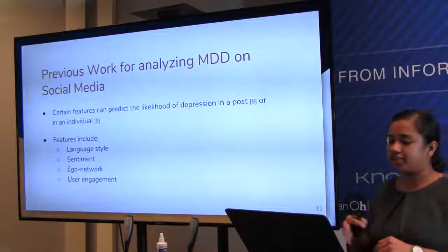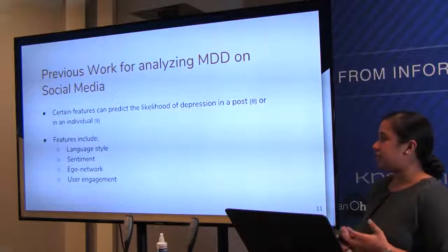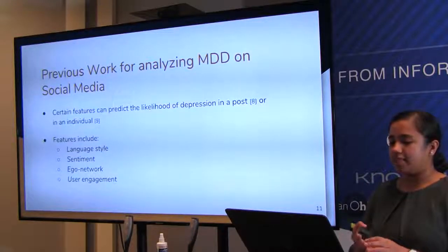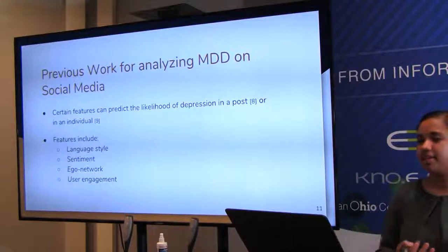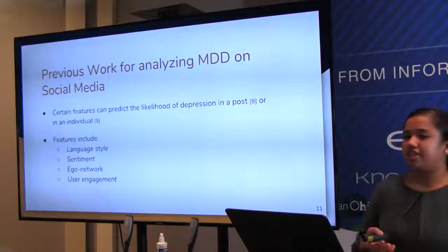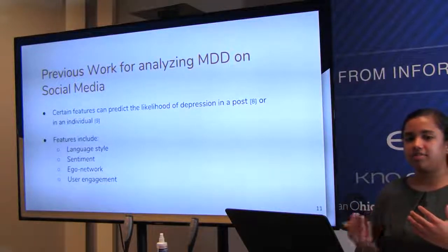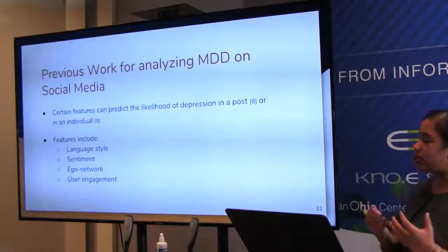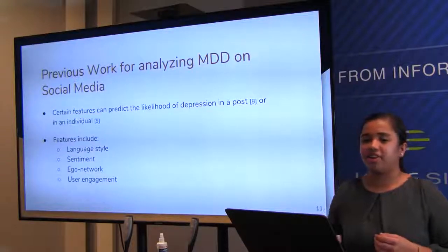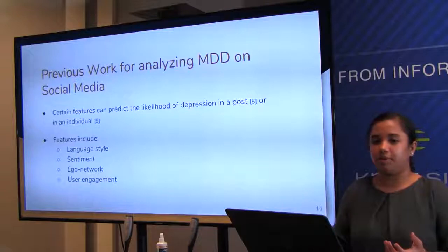Previous work for studying depression on social media consists of analysis on a post-by-post basis or at a user level. Features include language styles using LIWC — a tool used by psychologists to measure characteristics of text content — sentiment analysis to determine how positive or negative a tweet is, ego network analysis determining who users follow and who follows them back, and user engagement metrics such as how often they tweet, favorite others' tweets, follow new users, or have their content liked or retweeted.